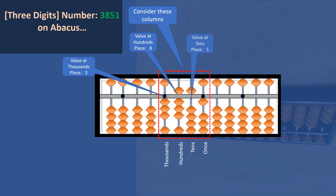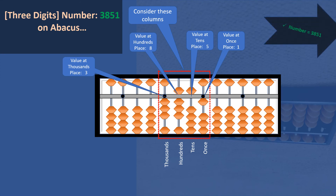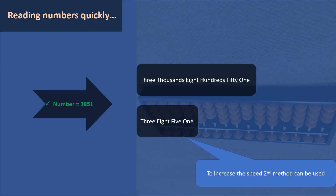Now for a four-digit number: 3851. At the thousands place, three lower beads are towards the bar so the value is three. At the hundreds place the value is eight, at the tens place the value is five, and at the ones place the value is one. So this is a four-digit number and the number is three-eight-five-one, or three thousand eight hundred and fifty-one.